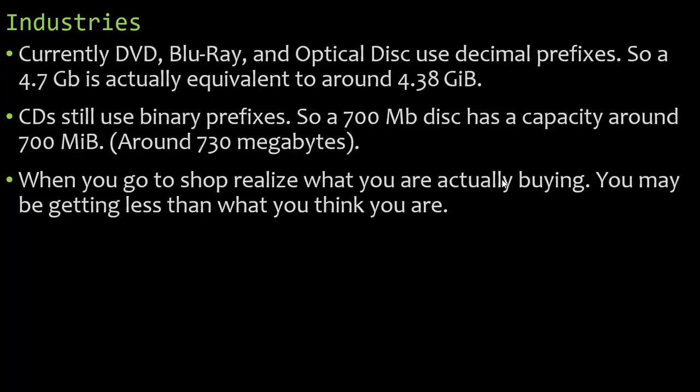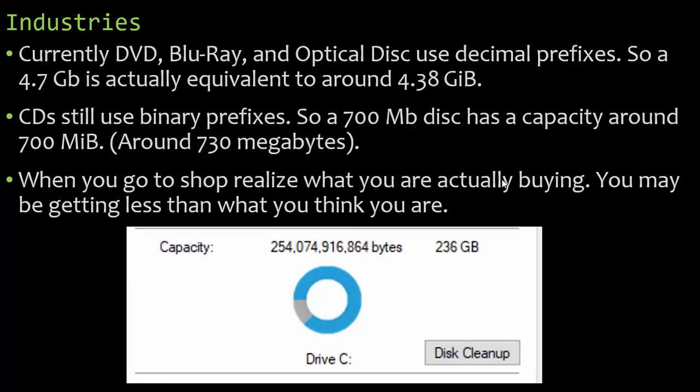When you go to shop, realize what you're actually buying. You may be getting less than what you think you are. For example, our school bought us brand new computers, and they say you're getting a 256 gig solid state drive. When we look at the capacity, we see that it's really only about 236 gibibytes. We're missing about 20 that we thought we were getting that we weren't.